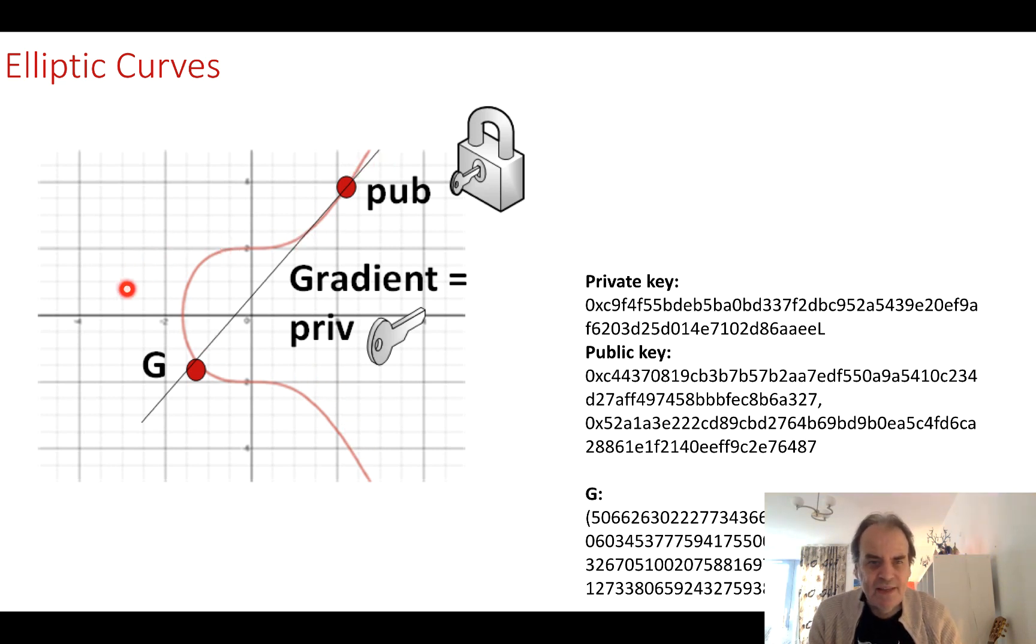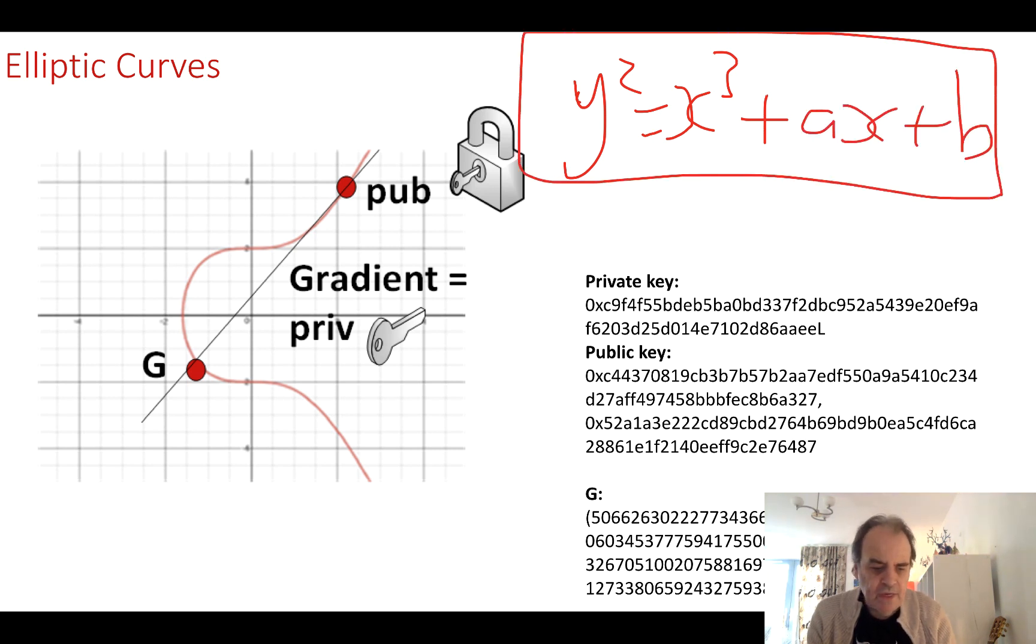An elliptic curve looks a little bit like this when we plot it. A typical curve is y squared equals x cubed plus ax plus b. When we plot our x, y we end up with something that looks like that.